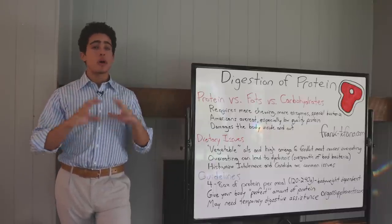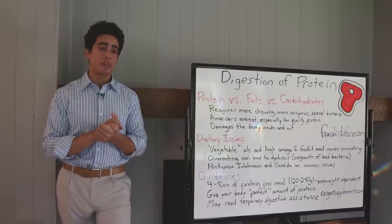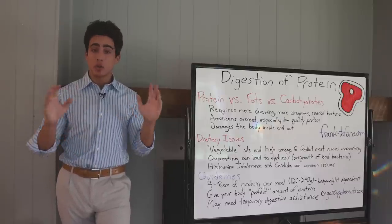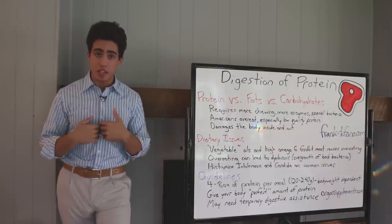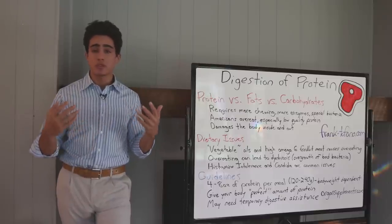Out of all the foods you can overeat, protein is by far the worst because it is just so difficult to digest. Your body needs so much to do it. And when it goes undigested in the stomach, then it kind of rots and produces really inflammatory compounds.